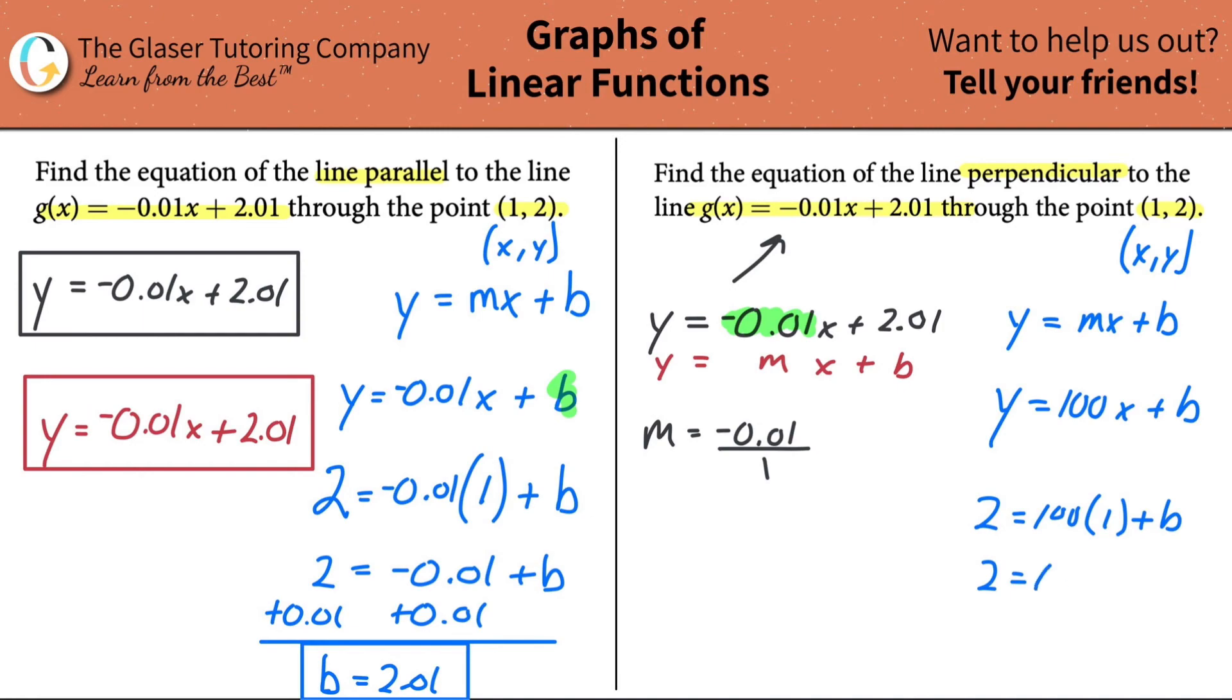So 2 will equal 100 times 1 plus then b. 2 equals 100 plus b. Subtract the 100 to the left-hand side and, lo and behold, we're going to get negative 98 equals b. And now we have defined our line. Our new line is y equals 100x minus 98. And that's it.